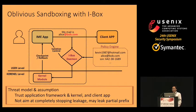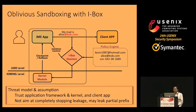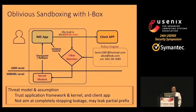To prevent IME apps from leaking user input, we use IBOX to perform on-demand oblivious sandboxing. IBOX is comprised of a kernel module, a daemon in the application framework, and a policy engine. IBOX controls IME state and interactions with the external world to protect user secrets. We assume that the application framework, the operating system kernel, and the client app are trustworthy. Note that we are not aiming at completely stopping leakage — we may leak some partial prefix.